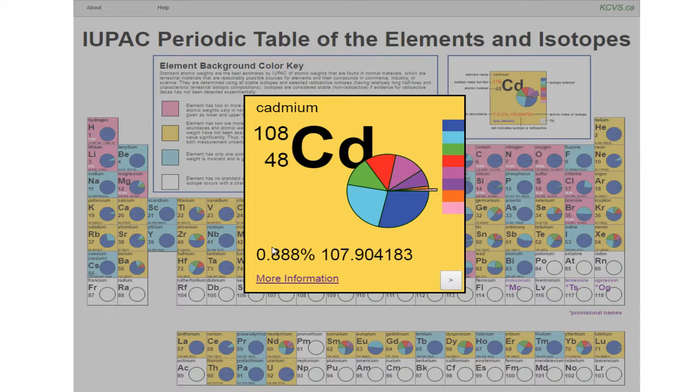Below the pie chart appear the two factors that are used to determine the atomic weight of an element, the percent abundance and the atomic mass of the specified isotope. These atomic masses are calculated relative to the carbon-12 atom, which is given an atomic mass of exactly 12.